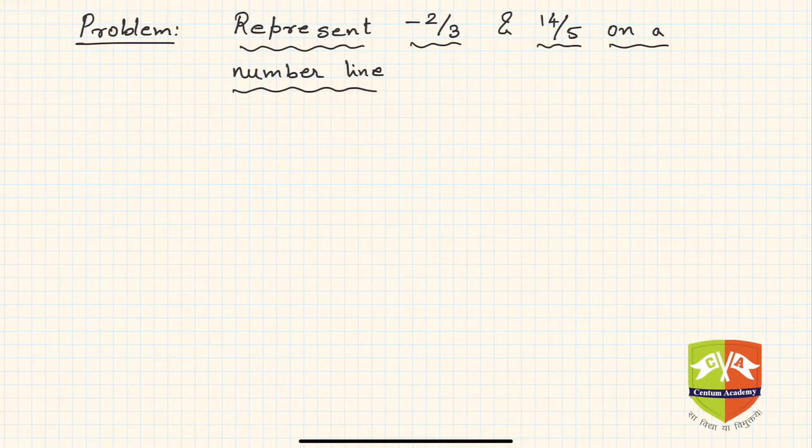Hey friends, welcome back to this session on problem solving. Today we are going to solve a problem related to number systems. The question says: represent -2/3 and 14/5 on a number line.